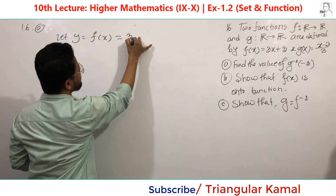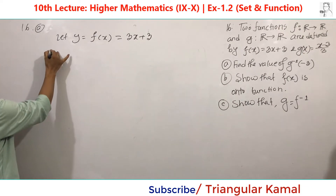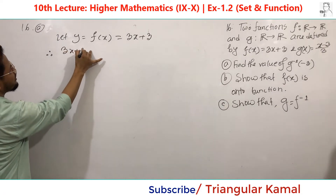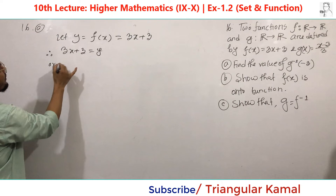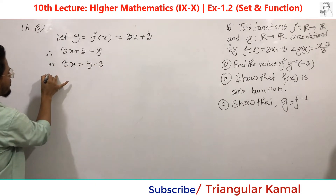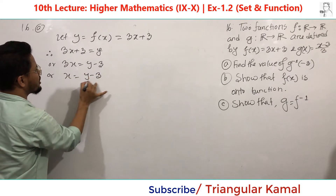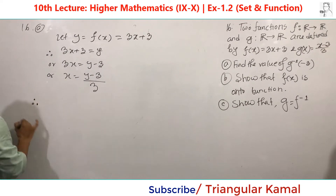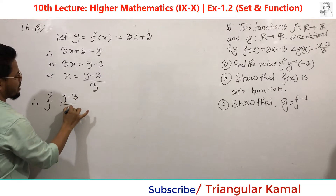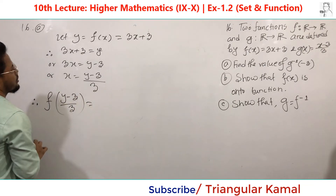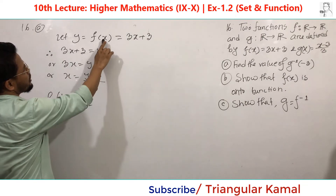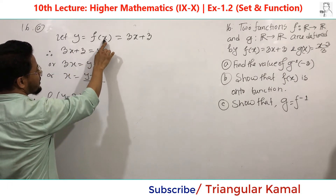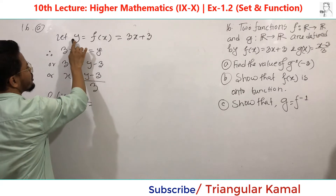Let Y equal F of X, which is given as 3 times X plus 3. So for the onto function, we can write 3 times X plus 3 equals Y. Now find the value of X: 3 times X will be Y minus 3, or X will be Y minus 3 divided by 3. Here X is the independent variable and Y is the dependent variable, which is the range of the function.